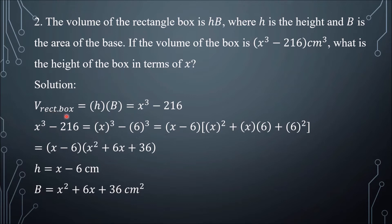The volume of the rectangular box is equal to h times b, which is equal to x cubed minus 216. Factoring x cubed minus 216, we have x cubed minus 6 cubed, since 216 is 6 cubed. Following general form number 2, we have x minus 6 — that's a minus b — then x squared plus x times 6, that's a squared plus ab plus b squared, where b squared is 6 squared. Simplifying, we have x minus 6 times x squared plus 6x plus 36, where x minus 6 is h and x squared plus 6x plus 36 is b.